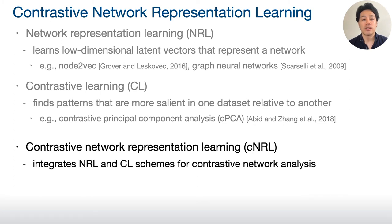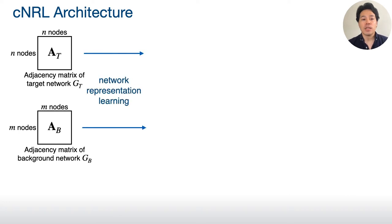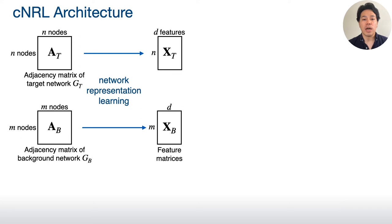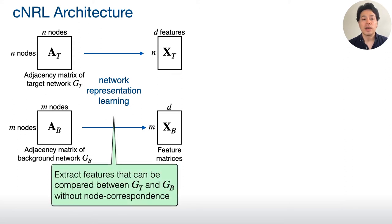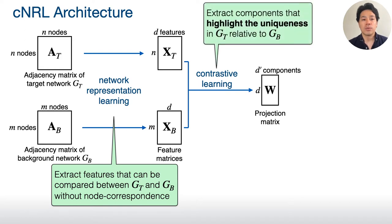I will explain how it utilizes the two schemes. To know the uniqueness of a target network, we want to compare the target and background networks, both of which can be represented as adjacency matrices. From adjacency matrices, by applying network representation learning, we can generate feature matrices. By doing this, we can extract comparable features between two different networks without knowing their node correspondence. From these obtained features, we can apply contrastive network representation learning to obtain a projection matrix. This projection matrix contains the information of the target network's uniqueness.